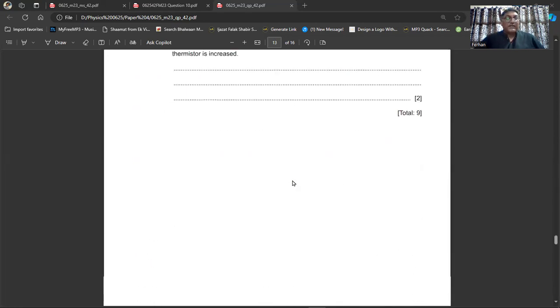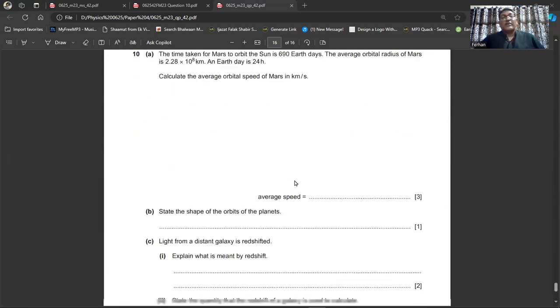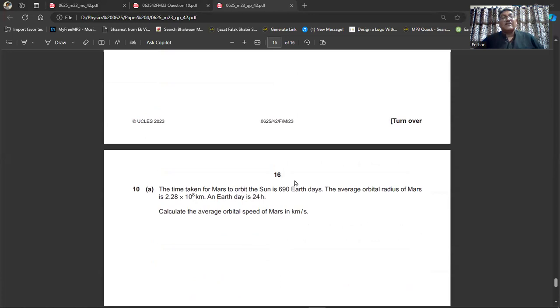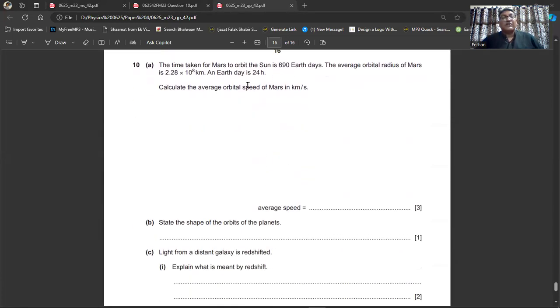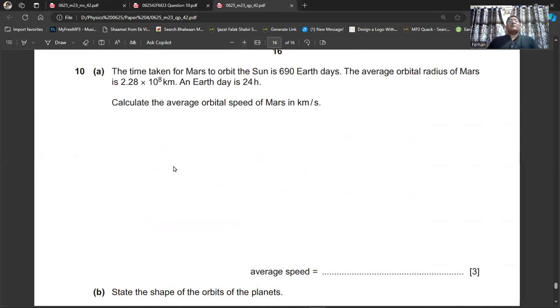This is question number 10. It says, the time taken for Mars to orbit the sun is 690 Earth days. The average orbital radius of Mars is 2.28 times 10^8 kilometers and Earth day is 24 hours. Calculate the average orbital speed of Mars in kilometers per second.